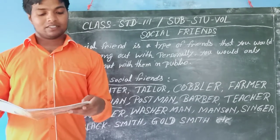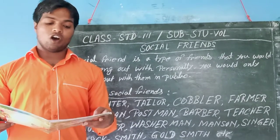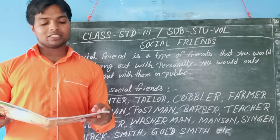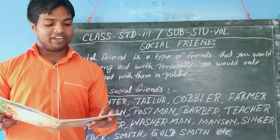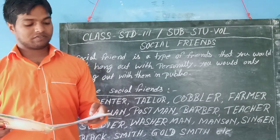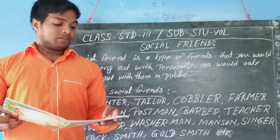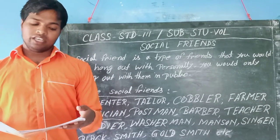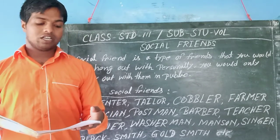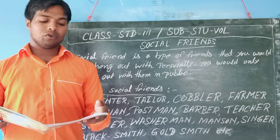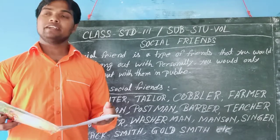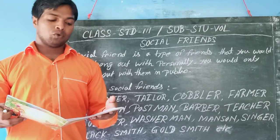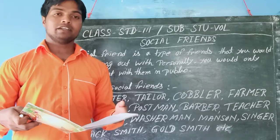Blacksmith makes things of iron. Goldsmith makes ornaments. Singer sings songs. A Sweeper cleans roads and drains.